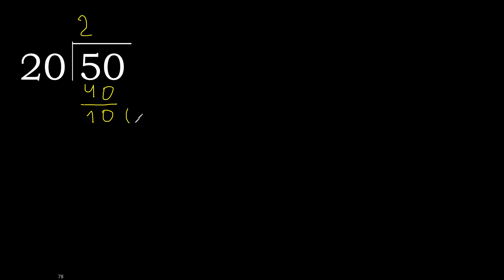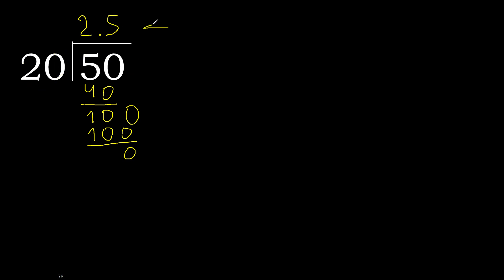Next. There is no number, therefore complete — always complete with 0. The decimal point is here. Bring down 0 to make 100. 20 multiplied by 5 is 100. Subtract 0. Therefore, 50 divided by 20 is 2.5.